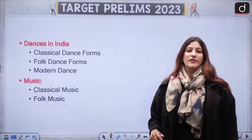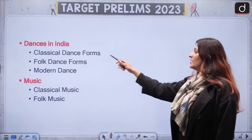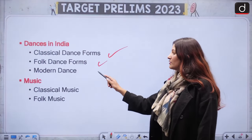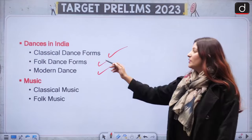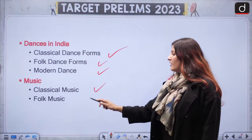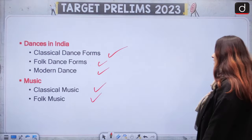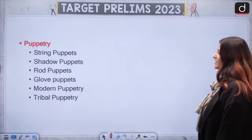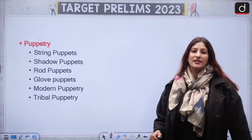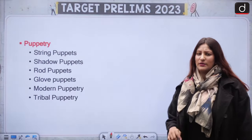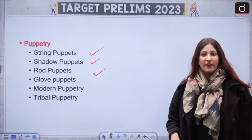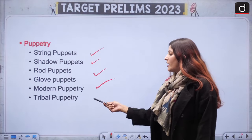Apart from paintings, dances are also important — Classical dances are most important, Folk dances are also important, and Modern dance as well. In music, we have Classical as well as Folk music, and both are important. Apart from that, puppetry — a question could be asked from here especially if any puppetry is in the news: Spring puppets, Shadow, Rod, Glove puppets, Modern puppetry, and Tribal puppetry.